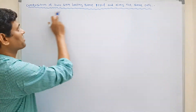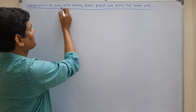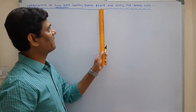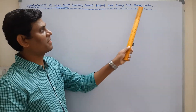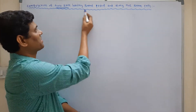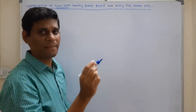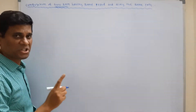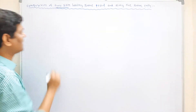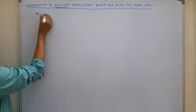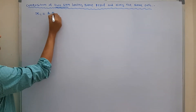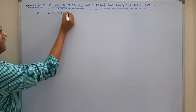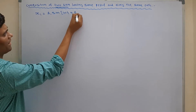Next part: composition of two SHMs having the same period and along the same path. We will consider two SHMs where the period is the same and they move along the same path. Let the displacement of the first SHM be X1 equals A1 sine omega t plus phi 1.